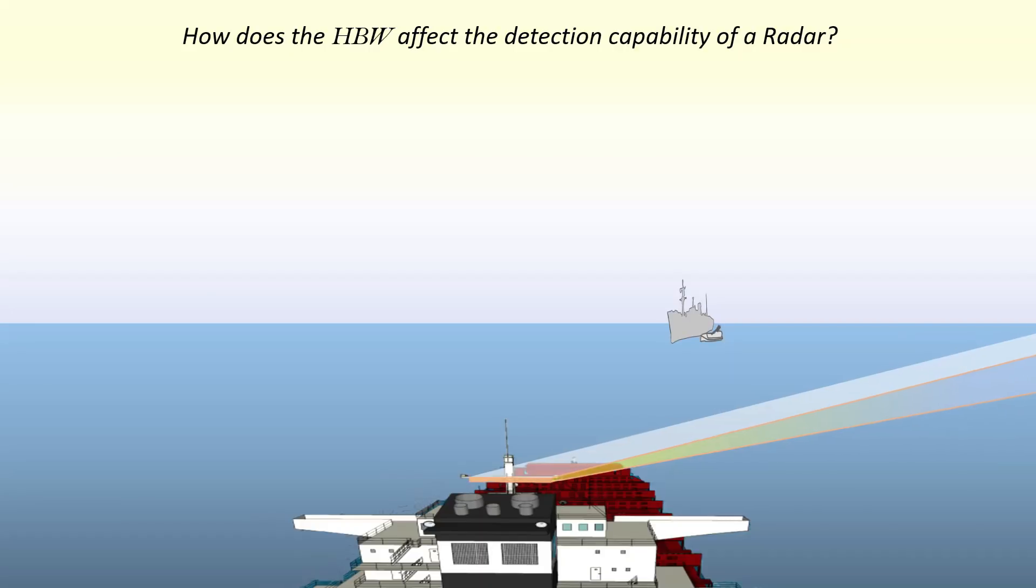How does the horizontal beam width affect the detection capability of a radar? The horizontal beam width describes the horizontal angular spread of the beam.